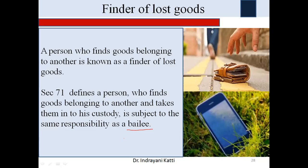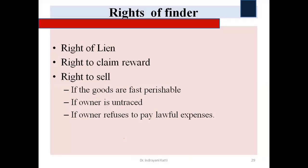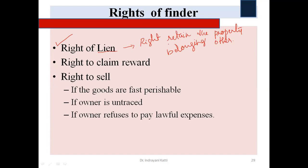The same responsibilities that apply to a bailee are also imposed on a finder of lost goods. The first right given to a finder is the right of lien — L-I-E-N. This is the right to retain the property belonging to others. He has the right to retain it, meaning he can refuse to return it to the true owner.